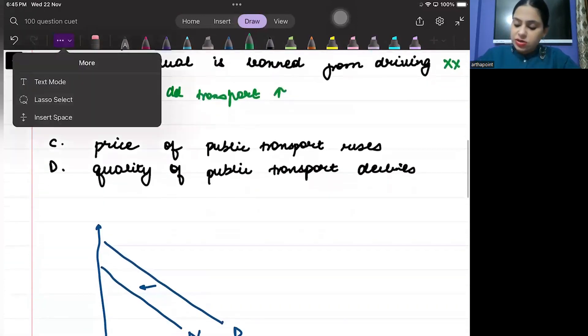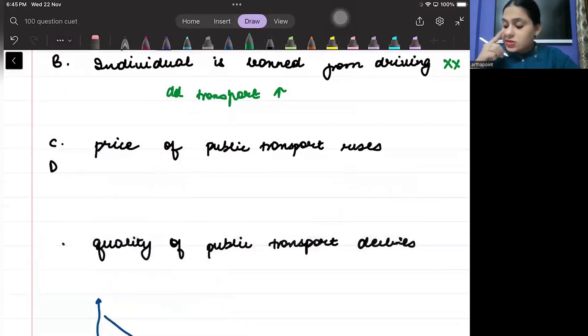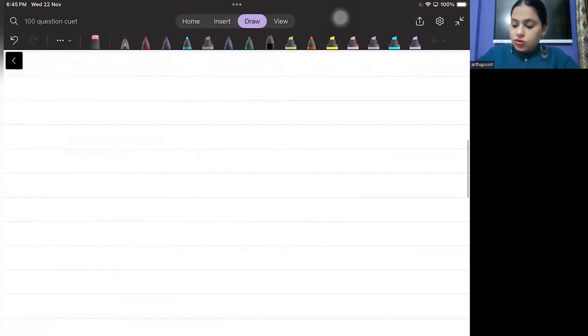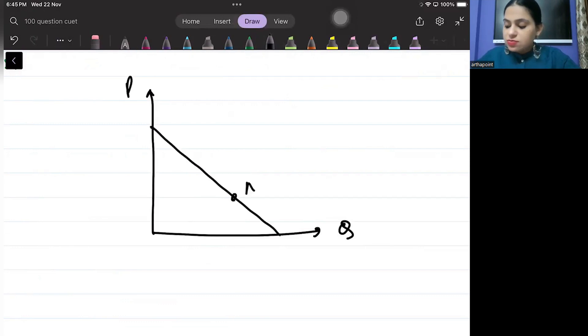Look at the third one. Price of public transport rises. Better tell me something. If I was to show relationship between price and quantity demanded, then it is always movement along the curve that price is increasing and quantity demanded is reducing.